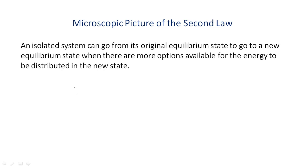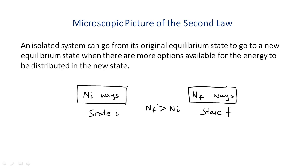Let us represent the initial state by a box like this here, and let us call this state i and the number of ways to distribute energy in this state is let's say n i and let's consider another state represented by this box which we call state final or state f and let's say the number of ways to distribute energy is n f let's say that n f is greater than n i then this is the direction of change of the system.